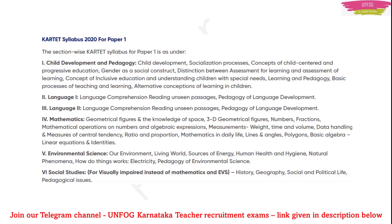Social Studies is a replacement of Mathematics and Environmental Science for visually impaired people. For example, if a person is visually impaired — meaning he can't see properly, or can't see completely — then that person will have to write only Social Studies, no Mathematics and Environmental Science for him or her.